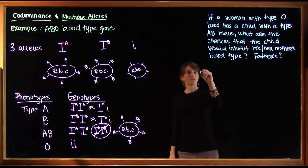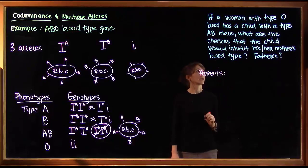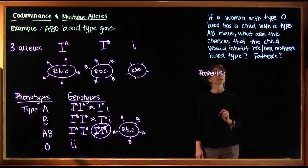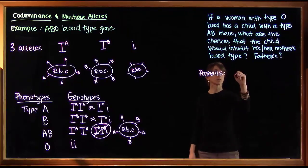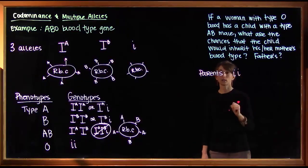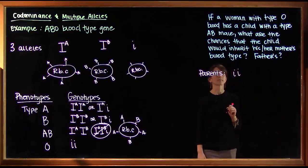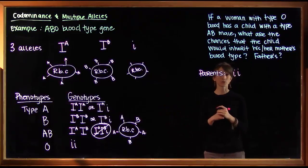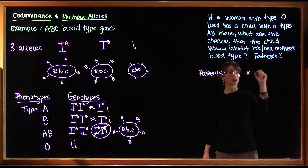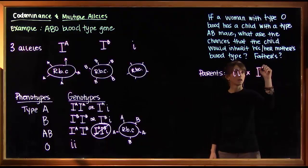So let's figure out the genotypes of our parents. We have a woman with type O blood. And for type O blood, there's only one possible genotype. So we know that she must be little i, little i. She is going to have a child with a type AB male. And for type AB, there's also only one possibility. So we're going to cross her with a male that is IA, IB.